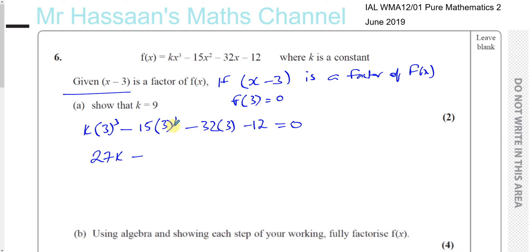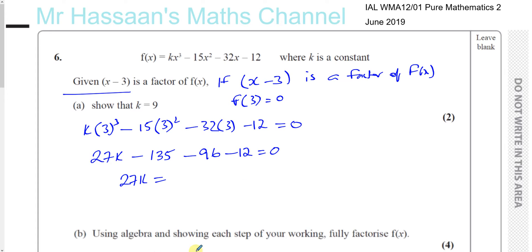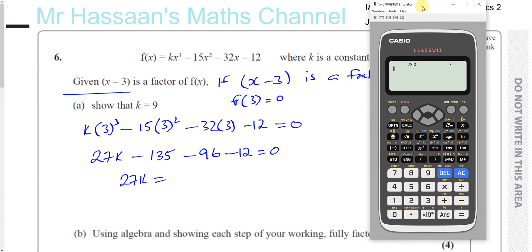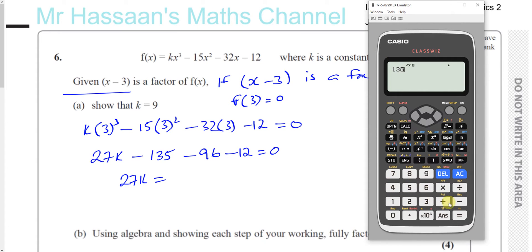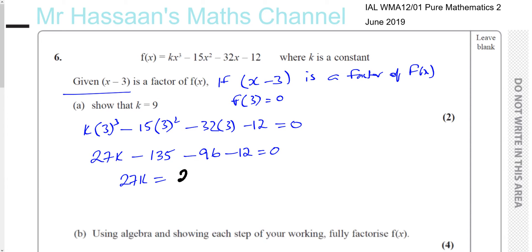15 times 9 gives 135. And 32 times 3 gives 96. Minus 12 equals 0. So 27k equals the sum of all of these on the positive side. Using the calculator: 135 plus 96 plus 12 gives 243. So k equals 243 divided by 27, which gives us 9.